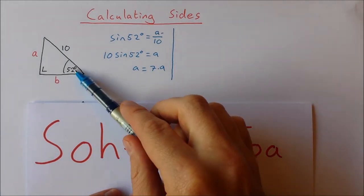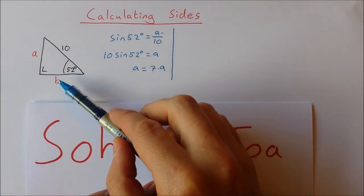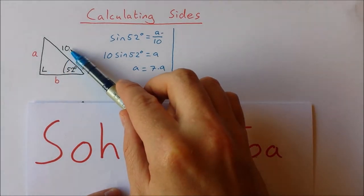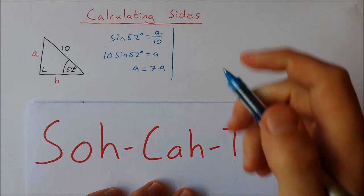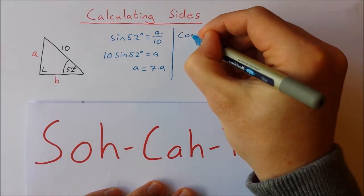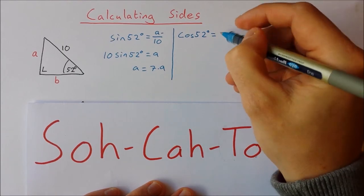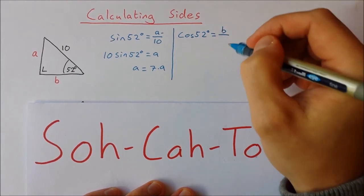I have the angle 52, I want the side 'b'. 'b' is the adjacent. I also have the hypotenuse, so I'm going to use cosine. The cosine of 52 is equal to the adjacent, which is 'b', over the hypotenuse, which is 10.